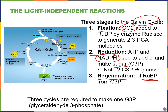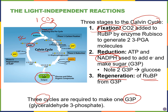You have to go through the Calvin cycle three times to generate one glyceraldehyde-3-phosphate (G3P) molecule. Ribulose bisphosphate (RuBP) has five carbons, and the main enzyme for carbon fixation is called rubisco. Rubisco binds carbon dioxide from the air and attaches it to RuBP to generate a six-carbon compound — that's carbon fixation.